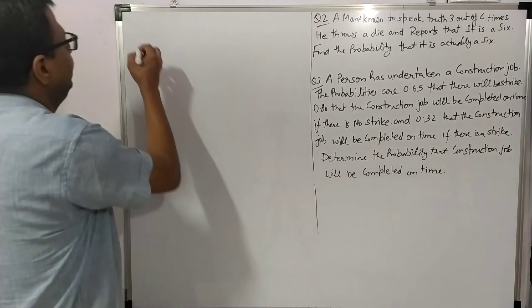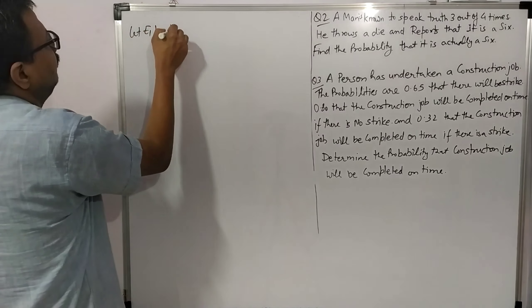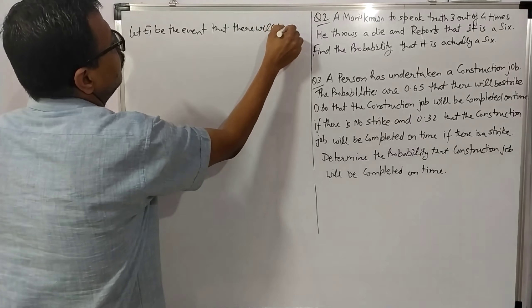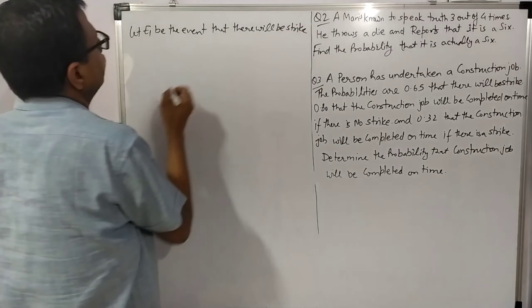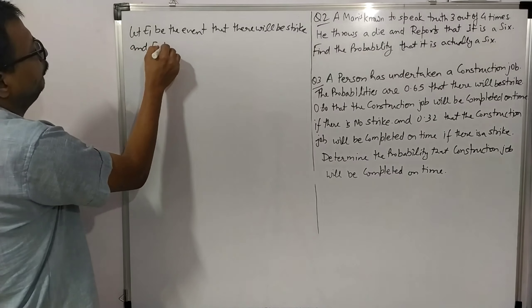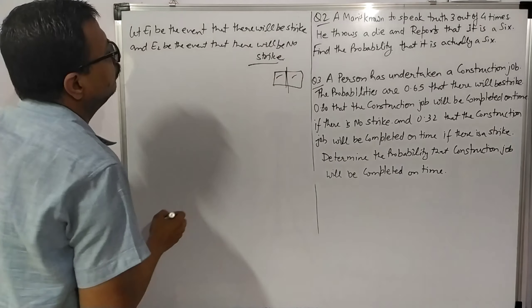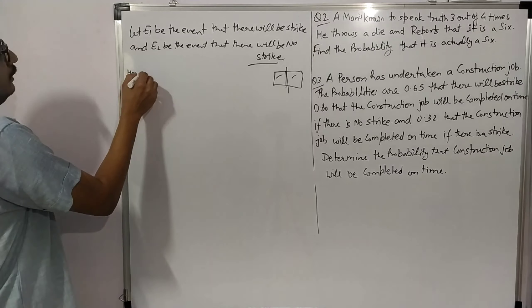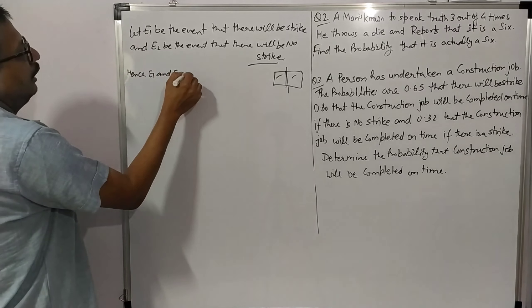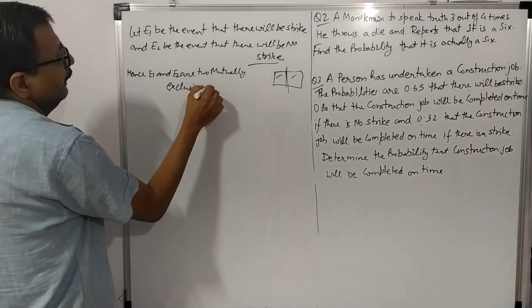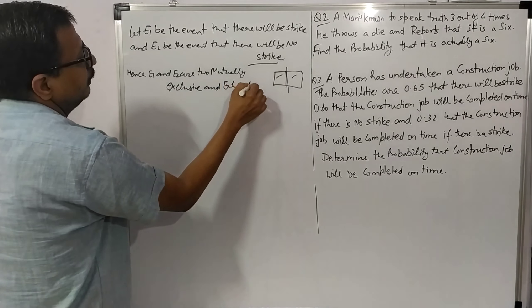Let E1 be the event that there will be a strike and E2 be the event that there will be no strike. The sample space is broken into two parts — either strike happens or it doesn't. Hence E1 and E2 are two mutually exclusive and exhaustive events.